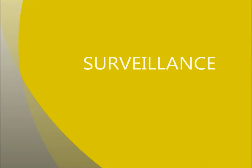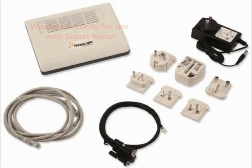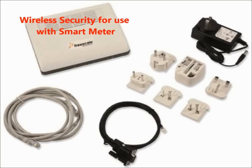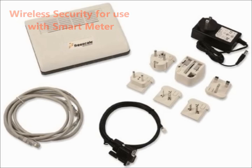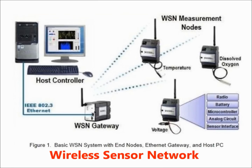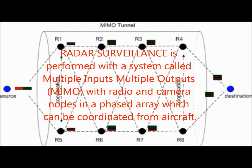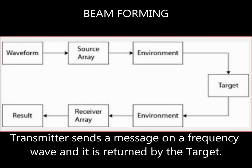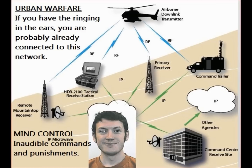Surveillance can be done through the smart meter with a chip that coordinates a wireless sensor network. Radar surveillance is performed with a system called Multiple Input Multiple Outputs, with radio and camera nodes in a phased array which can be coordinated from aircraft. The brain can be controlled and entrained to receive and transmit information like a radio transceiver. If you have ringing in your left ear, you may already be connected to a communications network, including satellite.